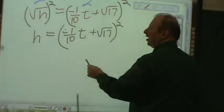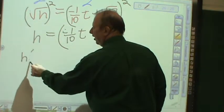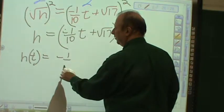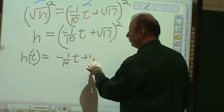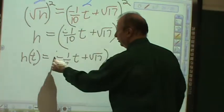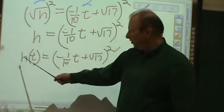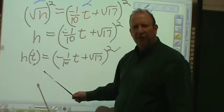h is ultimately given as (negative 1/10 t plus √17)². And personally, I like writing it this way. h(t) in terms of time is (negative 1/10 t plus √17)². Because it's really telling me that h is a function of the time.